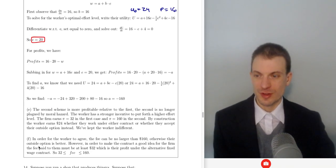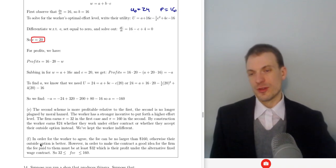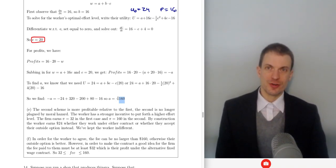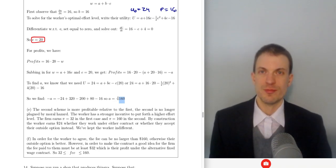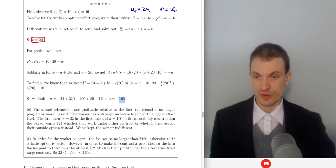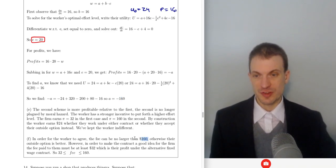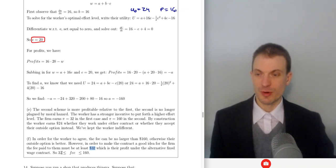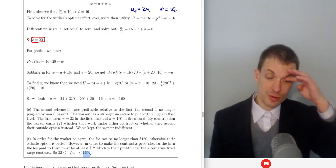Part F: suppose there's some fee — a transfer of $160 from the worker to the firm. How large can that transfer be to keep both the worker and the firm interested? For the worker to agree, the fee can't be larger than $160; otherwise they'd get less than their outside option — if they paid $161, their utility would be $23. In order for the contract to be a good idea for the firm, the amount received must be at least $32, which is their profit under the fixed wage contract. So the fee must be between $32 and $160.